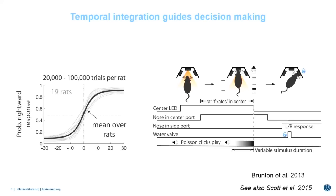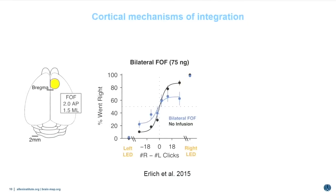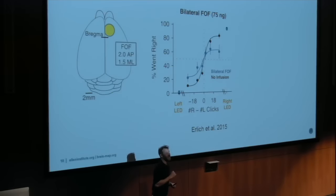Unlike Sherrington's experiment, this task requires the cerebral cortex — in particular a region of the frontal cortex we call the frontal orienting field (FOF). This brain region is part of the motor cortex, a multimodal region involved in head movements, oral-facial movements, and whisker movements. If you inactivate this region using pharmacological techniques like injection of muscimol, or optogenetic techniques, you reduce the animal's ability to integrate those acoustic clicks. In control trials you see a steep psychometric function; infusing muscimol flattens that function, indicating the animal is less sensitive to the number of clicks.